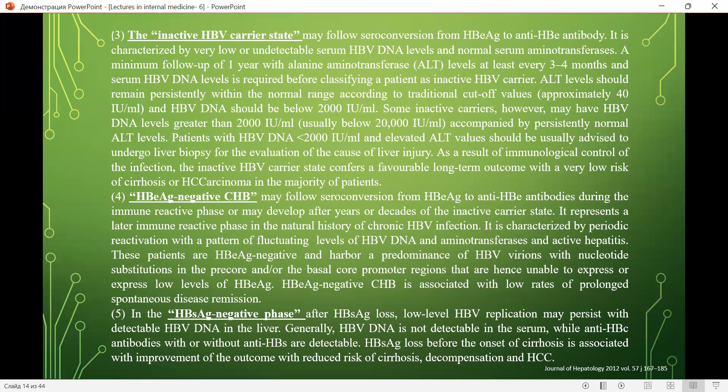In the fifth phase — the HBs antigen-negative phase — after HBs antigen loss, lower-level HBV replication may persist with detectable HBV DNA in the liver. Generally, HBV DNA is not detectable in serum, while anti-HBc antibodies with or without anti-HBs are detectable. HBs antigen loss before the onset of cirrhosis is associated with improved outcomes, with reduced risk of cirrhosis decompensation and carcinoma.